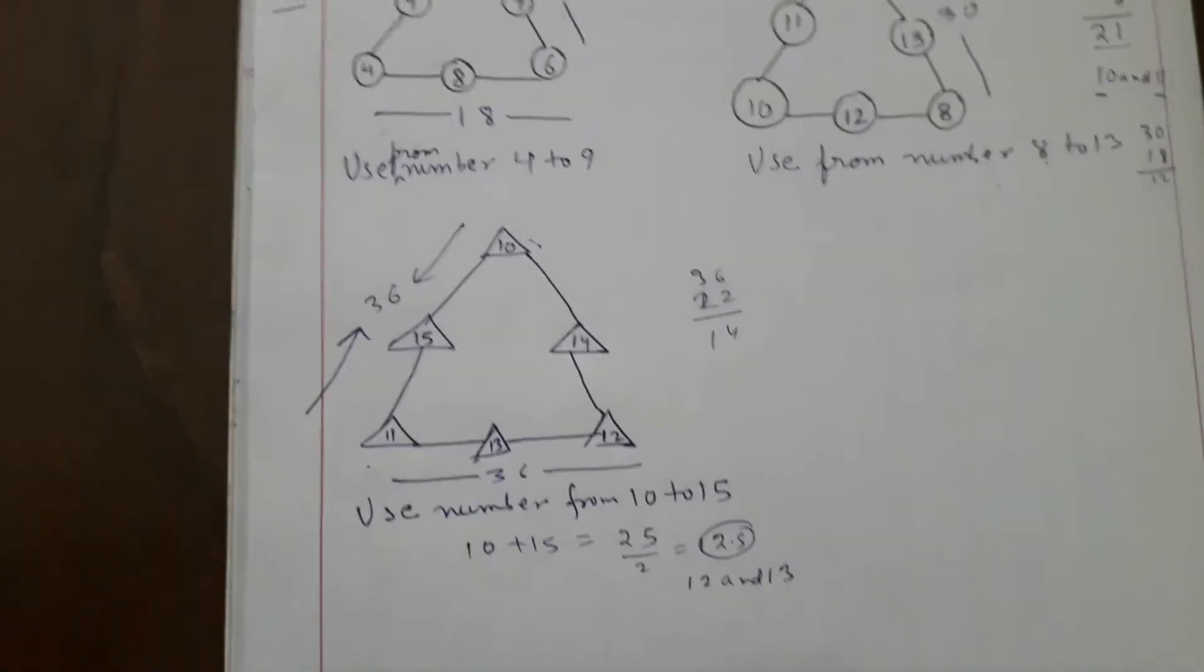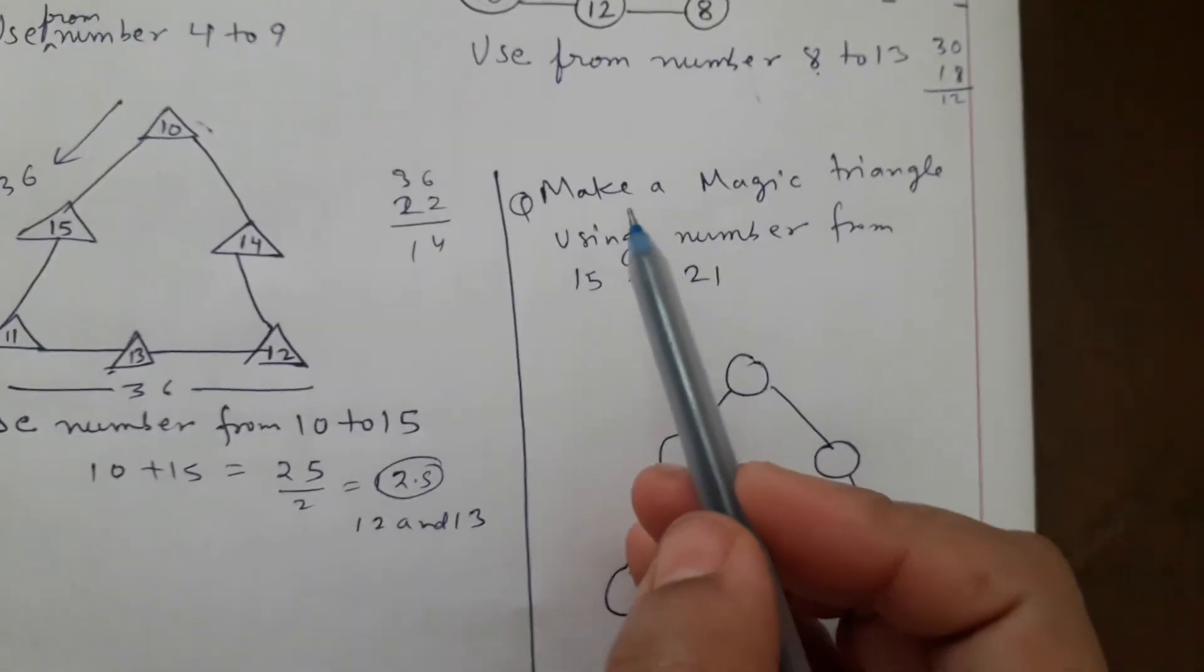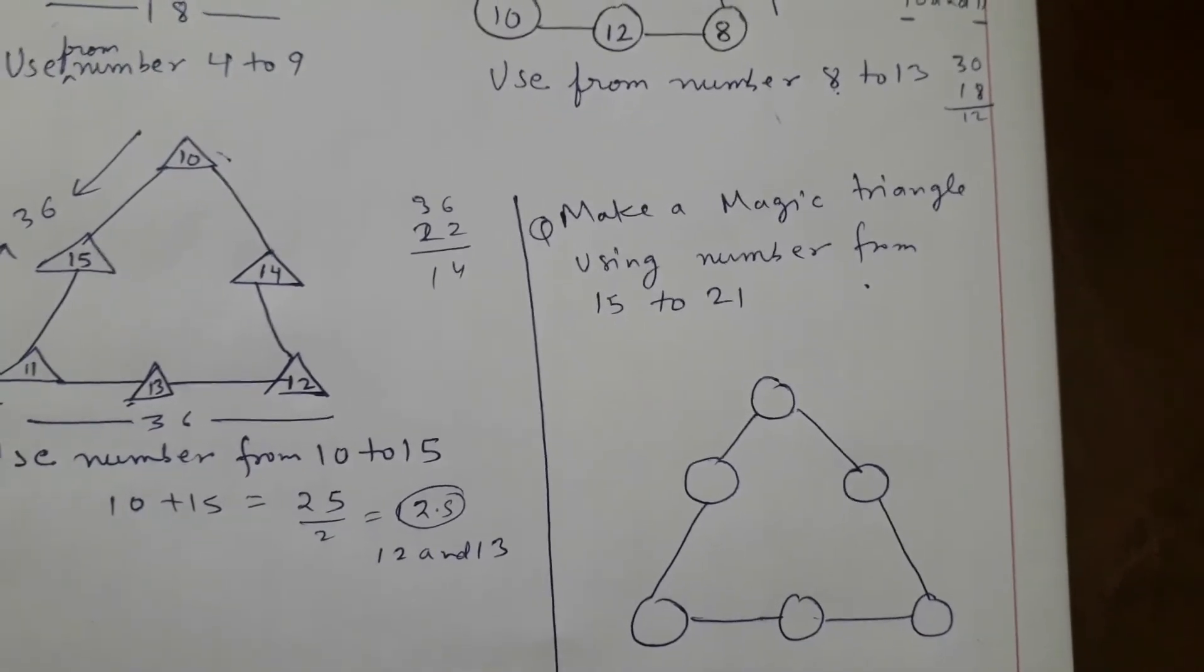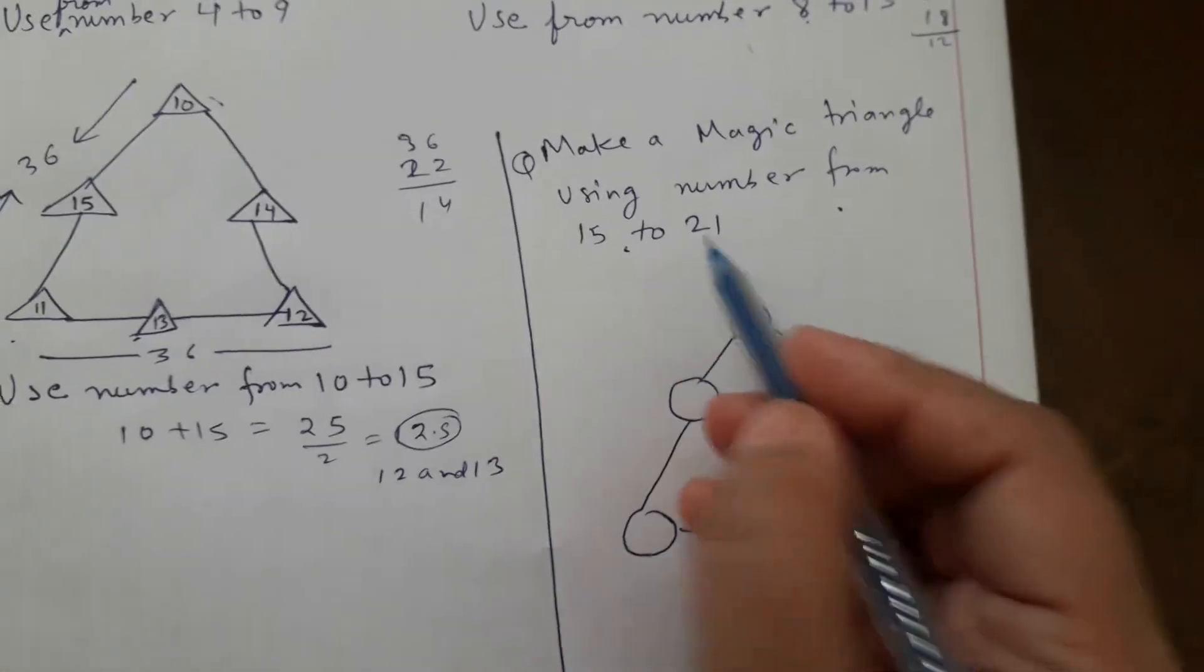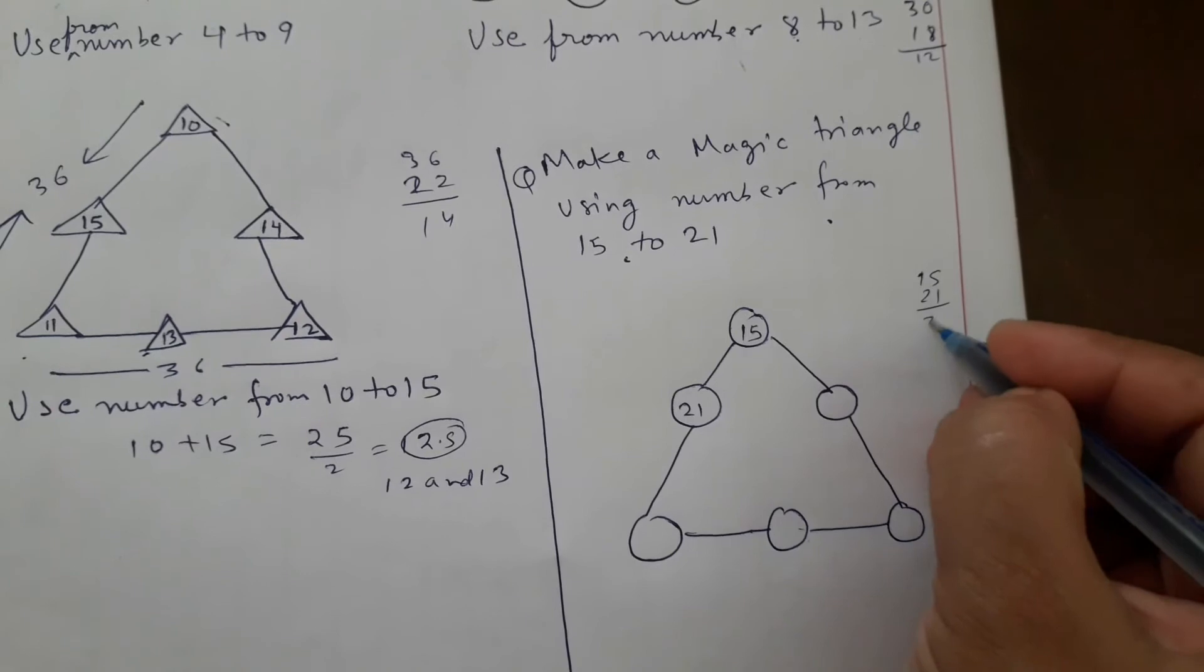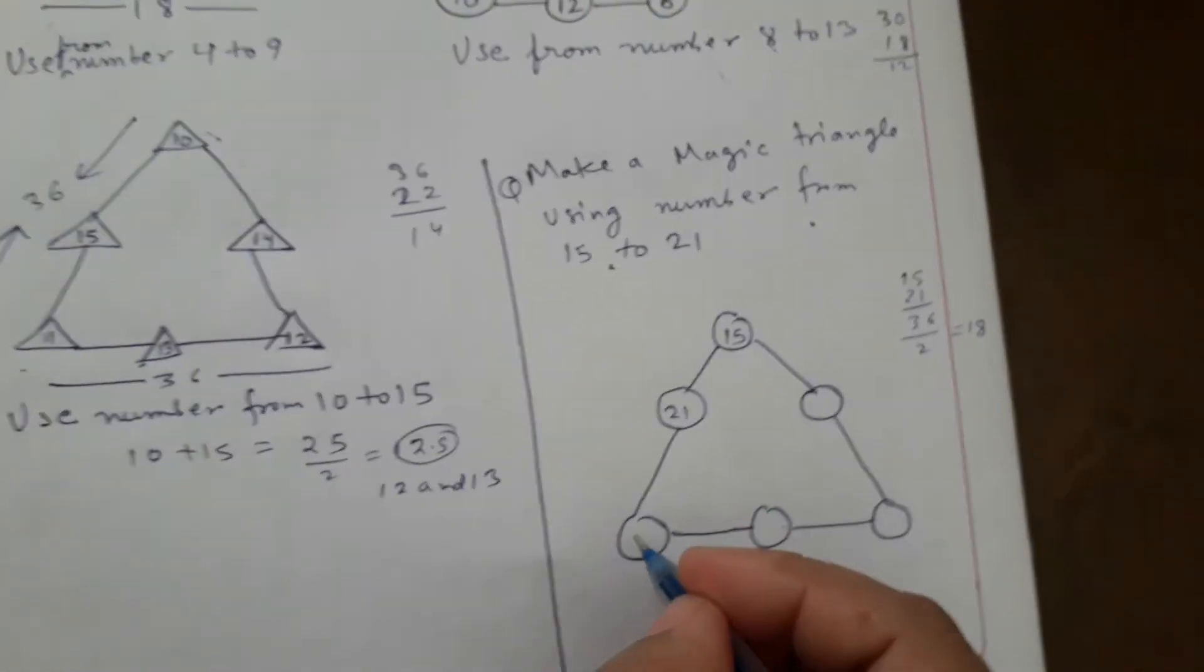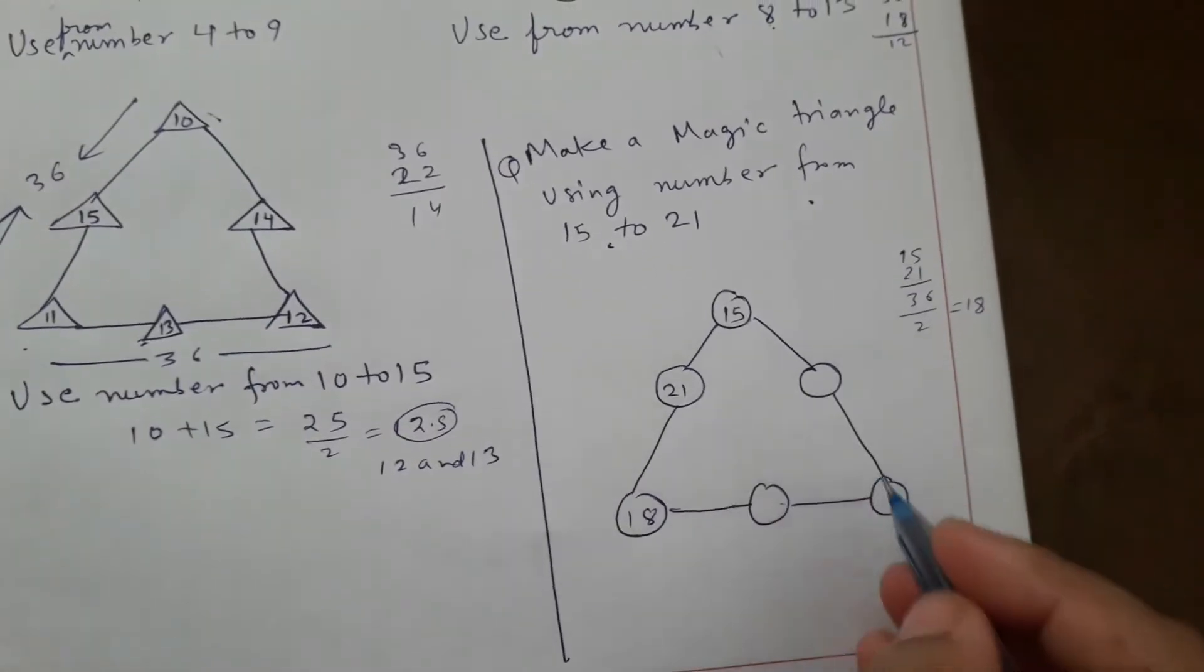Let's make a magic triangle using numbers from 15 to 21. If we add this, first add 15 and 21, it's coming 36. Half of 36 is 18, so our third number will be 18. We will put it here.